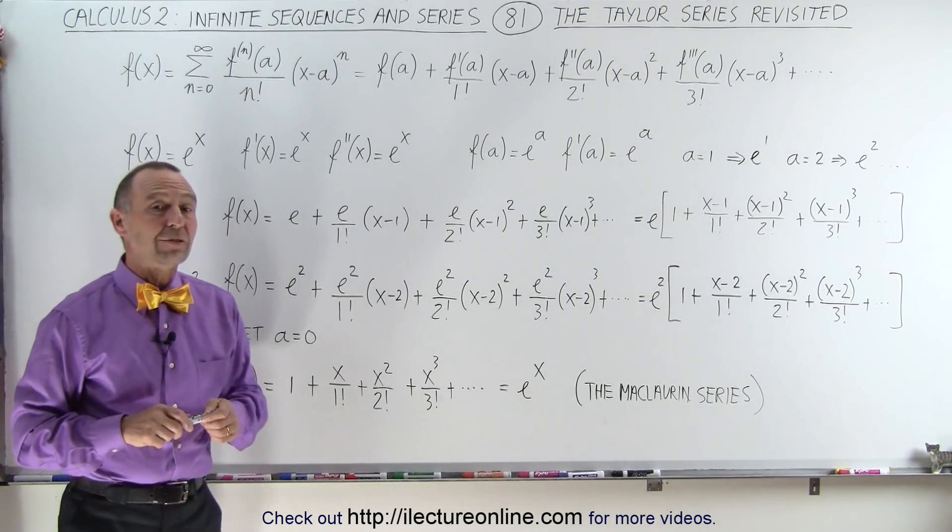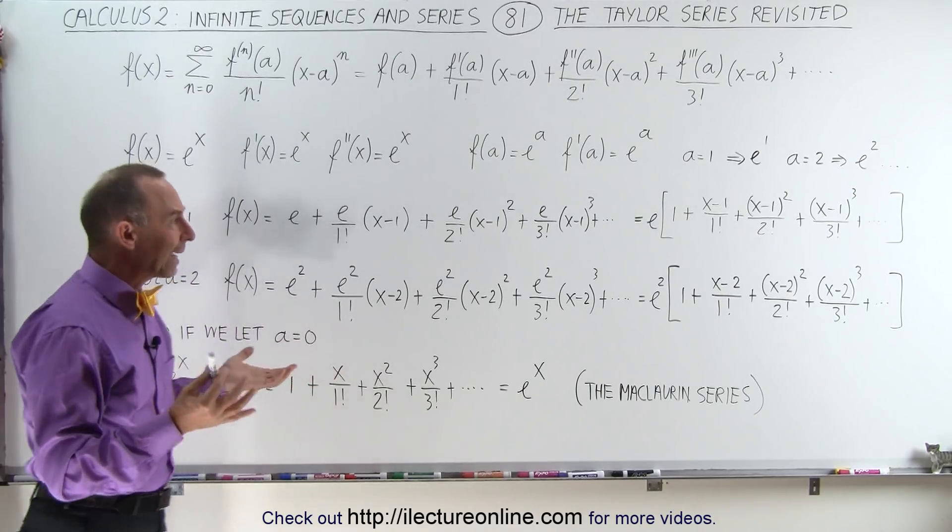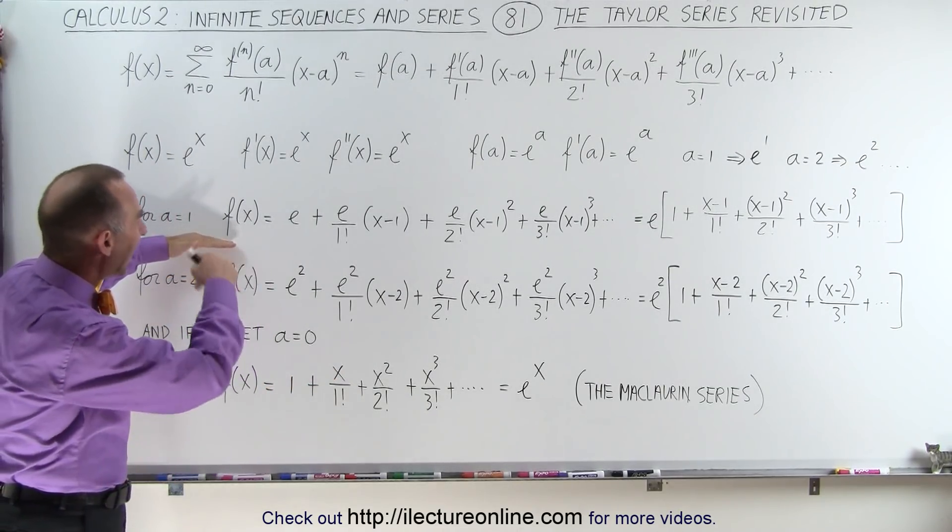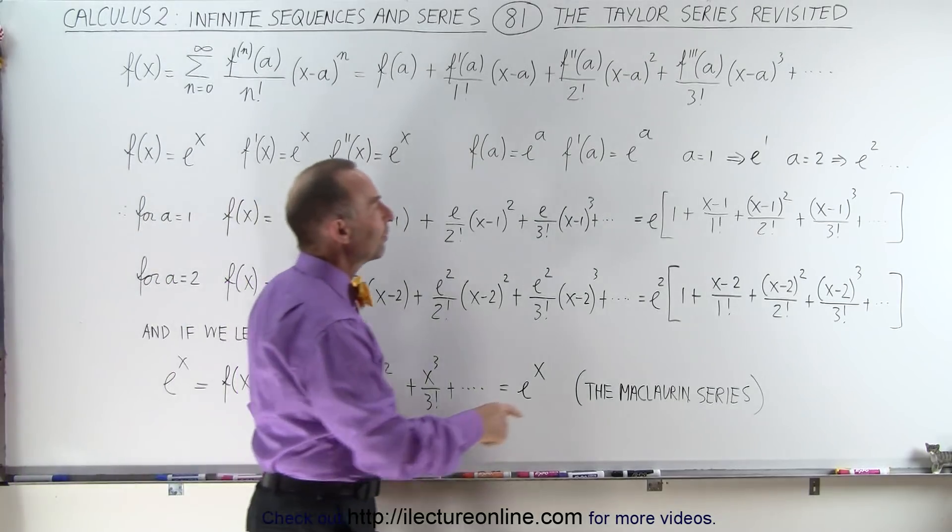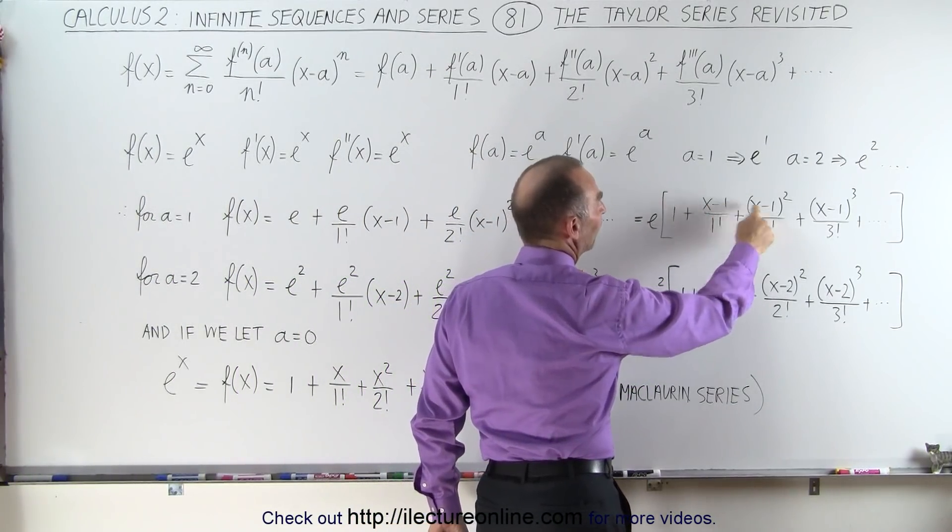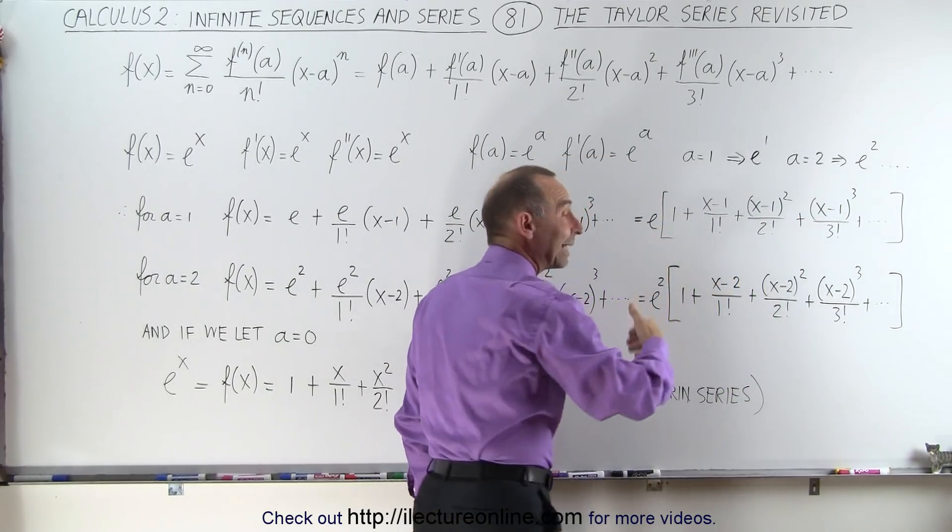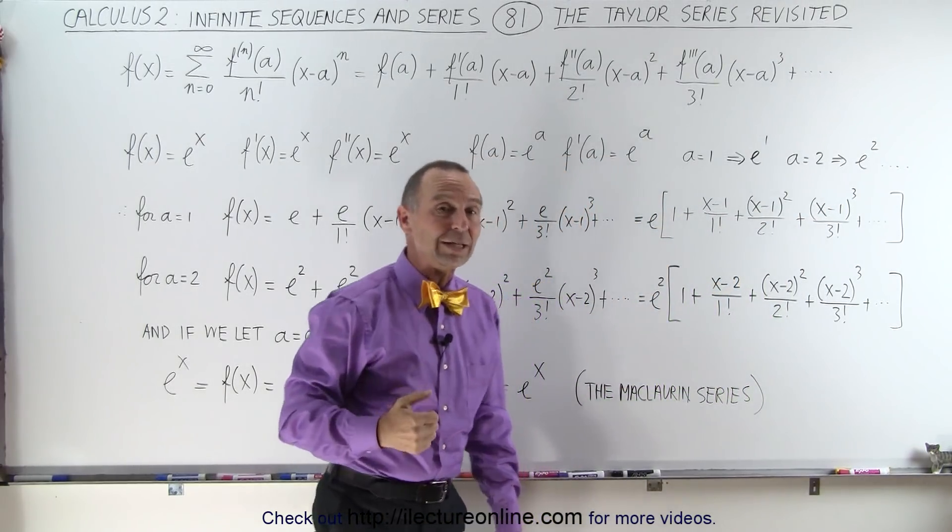So, let's say we want to evaluate the function for x = 1. If we now write the series out like this, the Taylor series, notice if we plug in the value of x = 1, every one of these terms goes to 0. 1 times e is e, and we get the exact value for e^x.